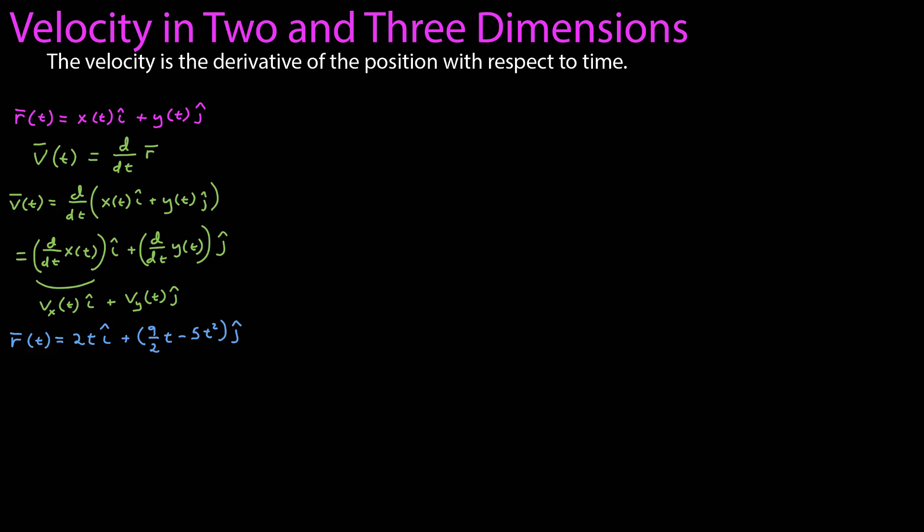For example, in the last video on position in two and three dimensions, we had a position function that looked like this. The 2t was the x component as a function of time. The y component was 9 halves t minus 5t squared. To calculate the velocity, I just calculate the derivatives of each component. The derivative of 2t is 2. The derivatives of 9 half t is 9 halves. And the derivative of negative 5t squared is negative 10t.